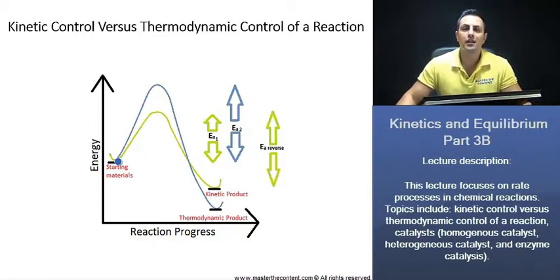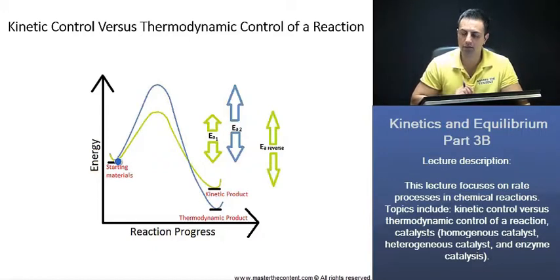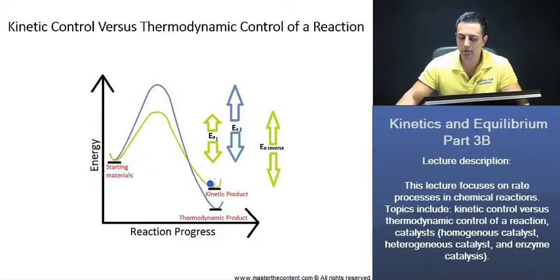Now let's talk about how the temperature will actually impact the different products that are formed. If our temperature is high enough to get over the first activation barrier here, EA1 that we see, then we will have kinetic product formation. Now that we're here, these products will not have enough energy to get back over the reverse activation energy. We will have kinetic product.